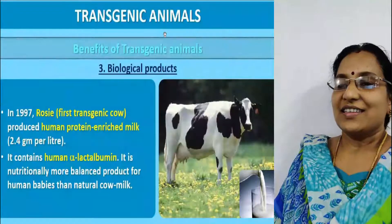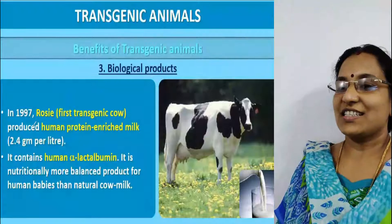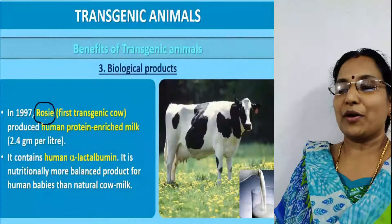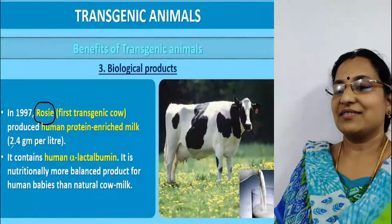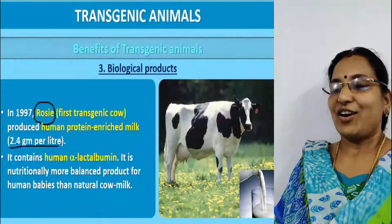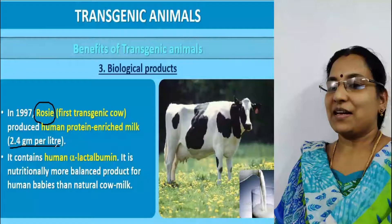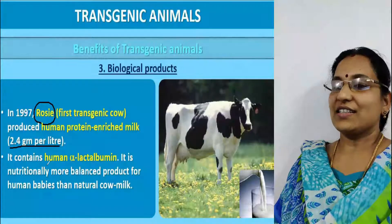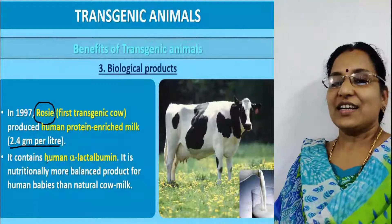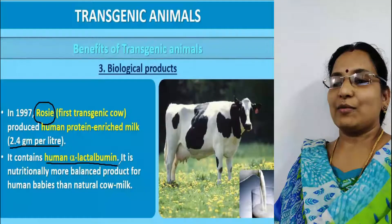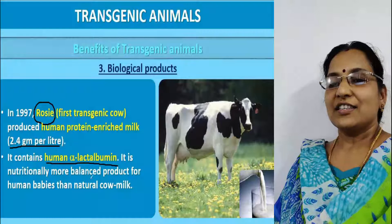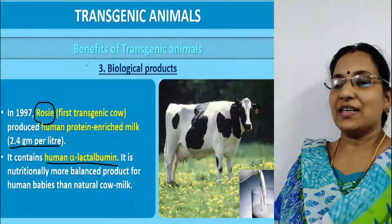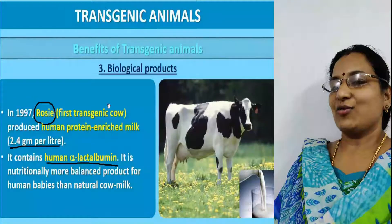There is a first transgenic cow named Rosie, which produced human protein-enriched milk at a quantity of 2.4 grams per liter. Introduced in 1997, it contains human alpha-lactalbumin and is a nutritionally more balanced product for human babies than natural cow milk.